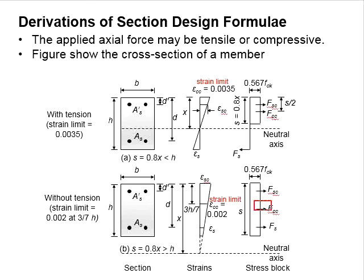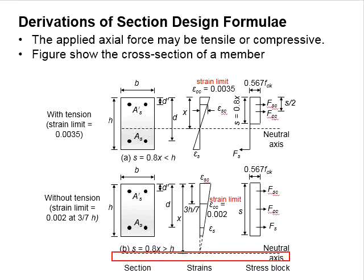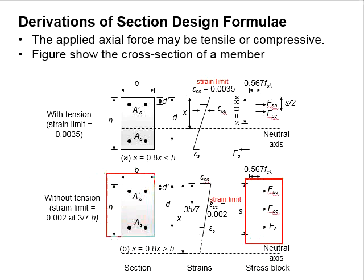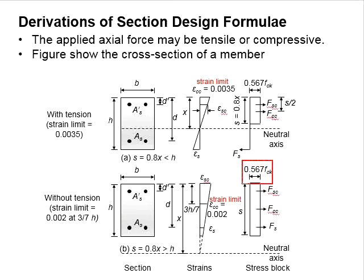The compressive force in the column is determined by the area of the stress block. Since the neutral axis falls beyond the cross-section and the stress block extends beyond the section as well, s here is equal to h. This gives the maximum compressive stress of the concrete. The forces in both steel bars are determined based on the stress-strain relationship.